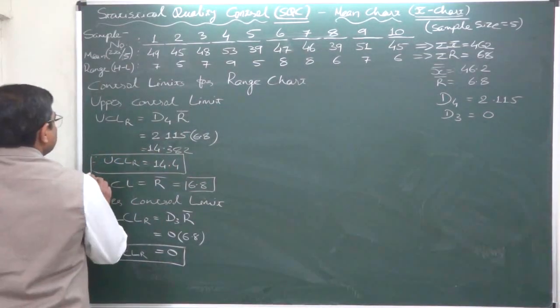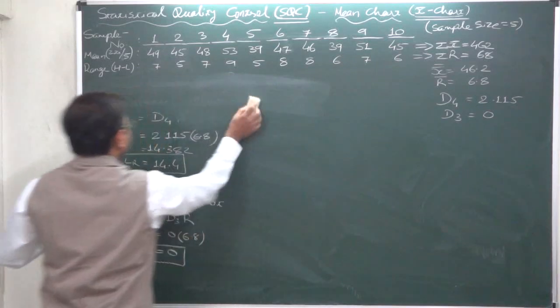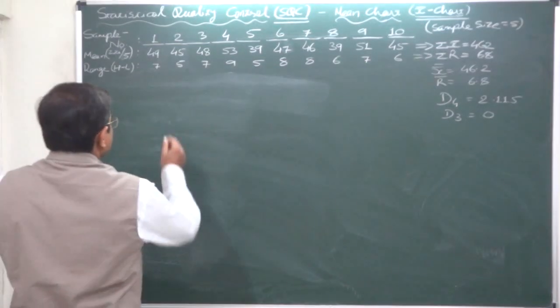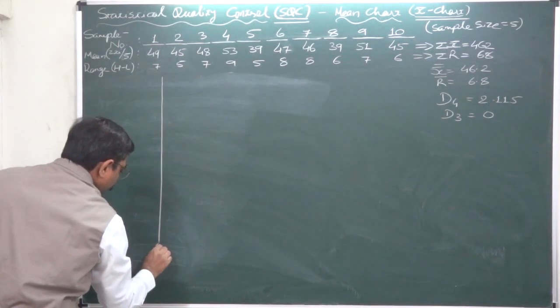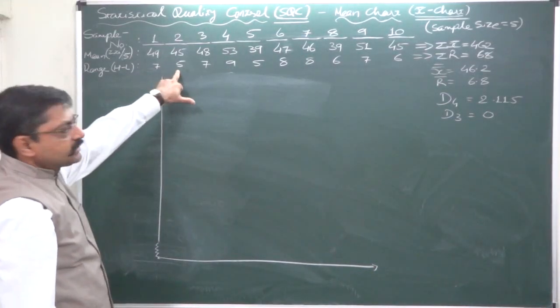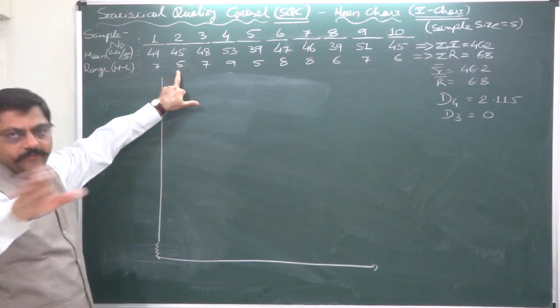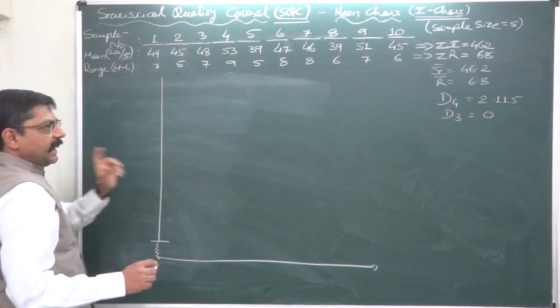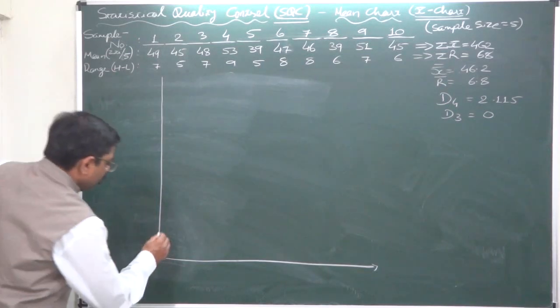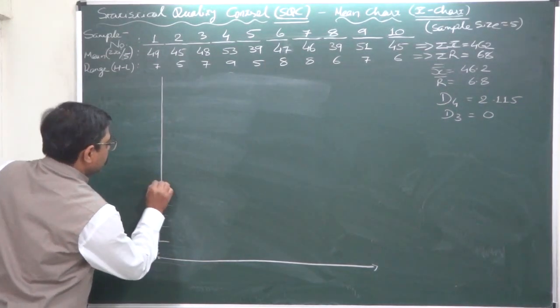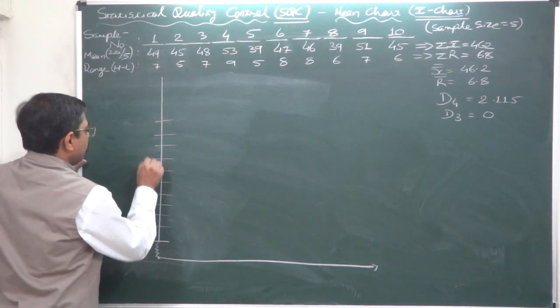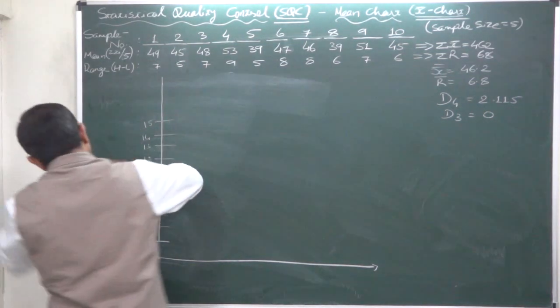On the vertical axis we are going to take the sample range, and on the horizontal axis we are going to take the sample number. Again we are going for pulling because the smallest value or smallest range is 5, so it is not necessary to write 1, 2, 3, 4. The highest value we need is 15 because upper control limit is as large as 14.4. These are sample ranges.